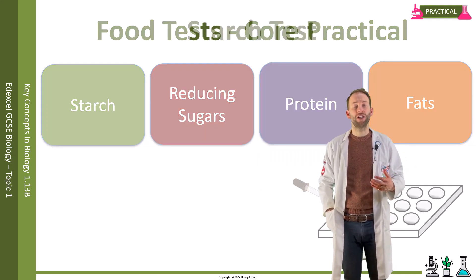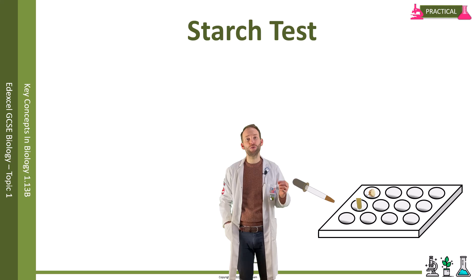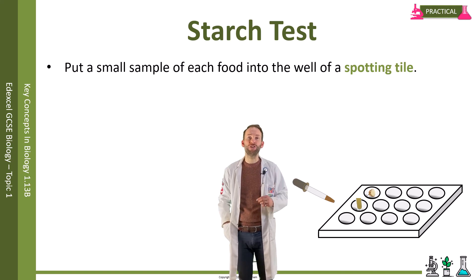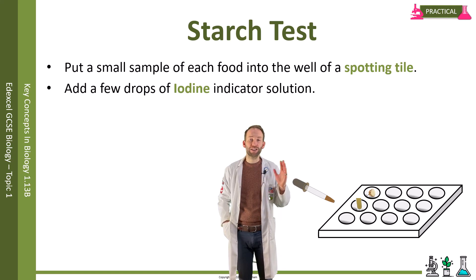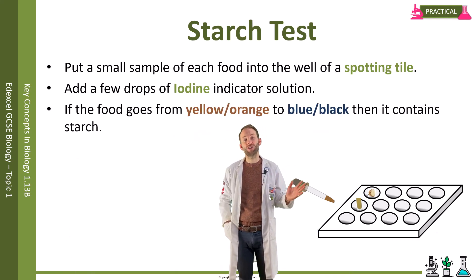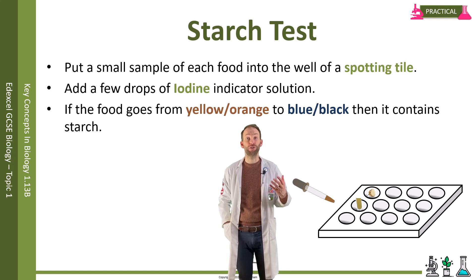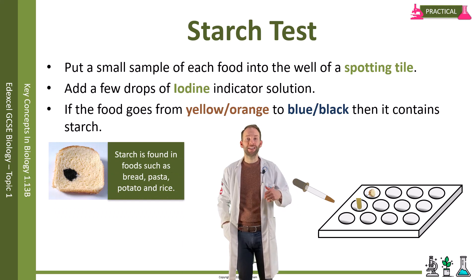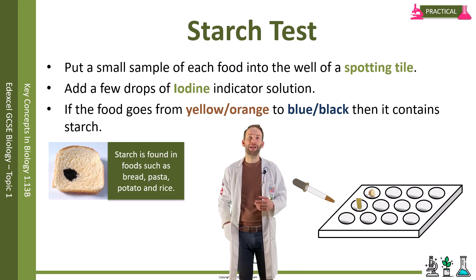For the starch test, you take a small sample of the food and put it into a little well on a spotting tile, or maybe into a test tube, and you add a few drops of iodine indicator solution. The color change will go from yellow-orange to blue-black if starch is present. Foods where you're most likely to see results are things like bread, pasta, potato, and rice — they have lots of starch in, they come from plants, and you will see a nice blue-black color.